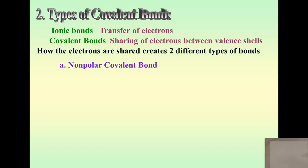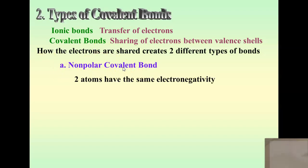The first category is called the nonpolar covalent bond. It makes more sense after we go through the second type, but it is still a covalent bond — we're still talking about sharing electrons. In a nonpolar covalent bond, we have two atoms that have the exact same electronegativity, the exact same pulling ability.